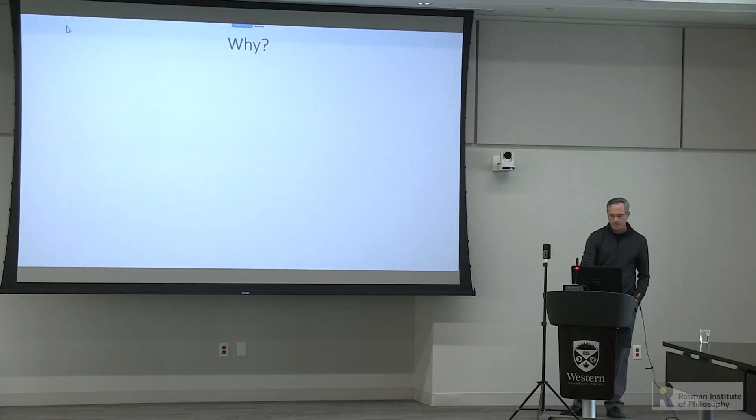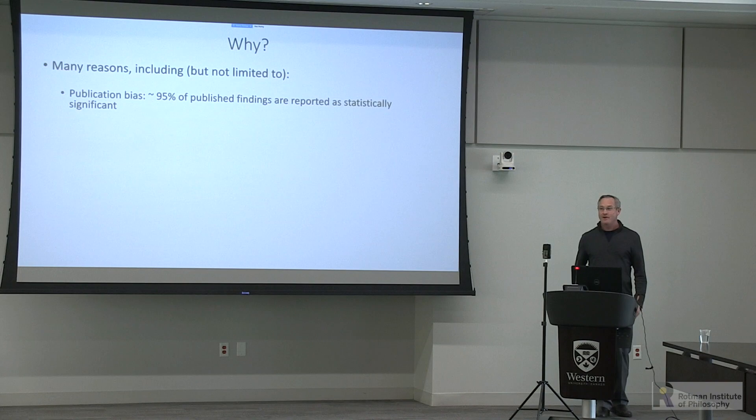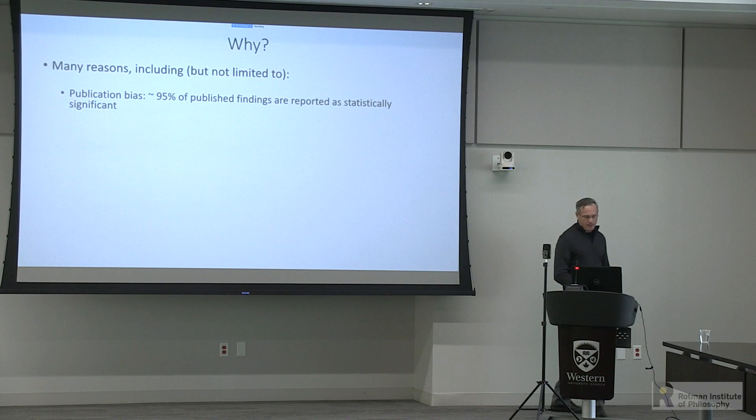There are many reasons why we might not be able to replicate findings. One that some folks suggest is the most damaging to scientific progress is publication bias. If you look at what's in psychological journals and pull out all the published findings — as Sterling did in 1959 and others more recently — approximately 95% of all reported statistical tests show statistically significant results in the predicted direction.